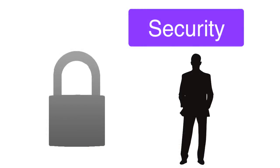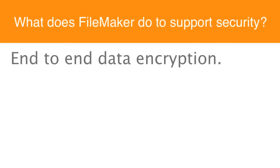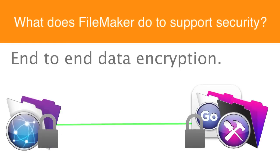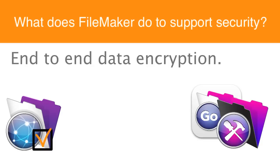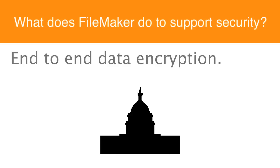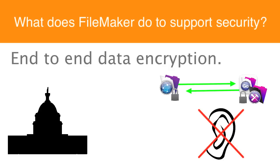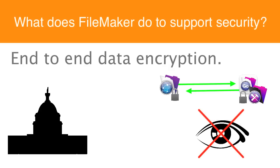Let's take a step back and talk about security in a general sense. What does FileMaker do natively to support security? One of the biggest things FileMaker does is provide end-to-end encryption of the database as it transits back and forth across the internet or across the wire. There's a checkbox in FileMaker server that, if you activate it, all data transactions between the FileMaker server and the FileMaker client are fully encrypted. That capability is now built into the FileMaker platform.